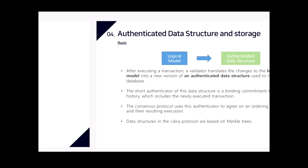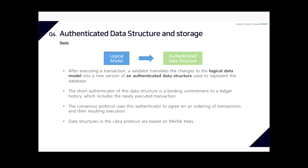Next is authenticated data structures and storage. After executing a transaction, validators translate the changes to the logical data model into a new version of an authenticated data structure representing the Libra database. The short authenticator of this data structure is a binding commitment to the ledger history including the newly executed transactions. The consensus protocol uses this authenticator to agree on an ordering of transactions and their resulting execution.